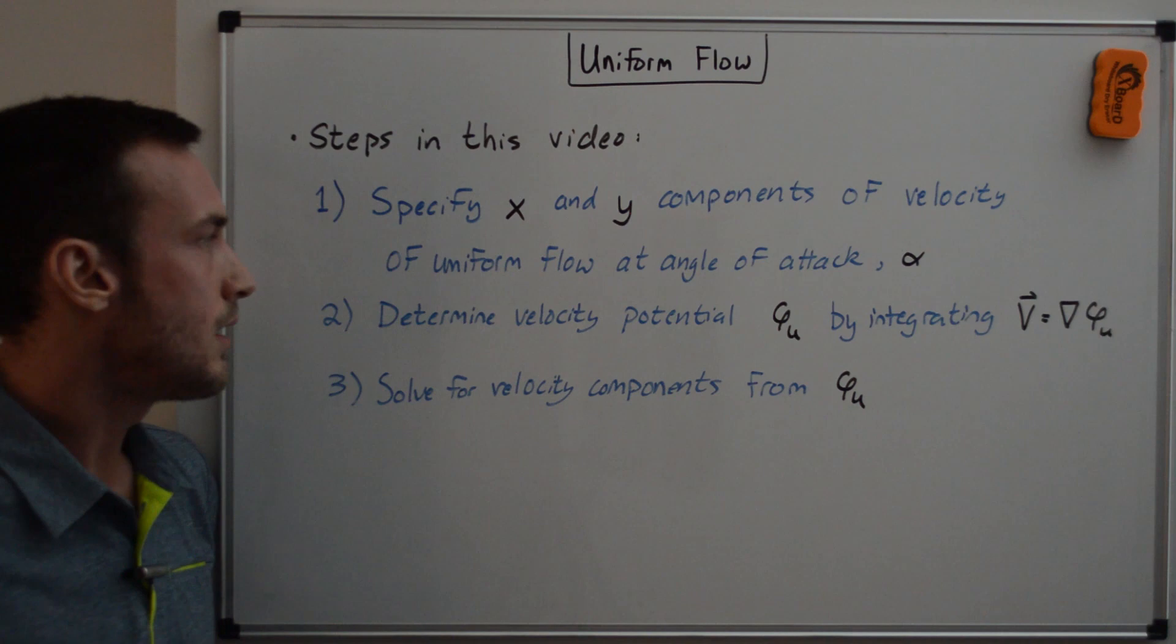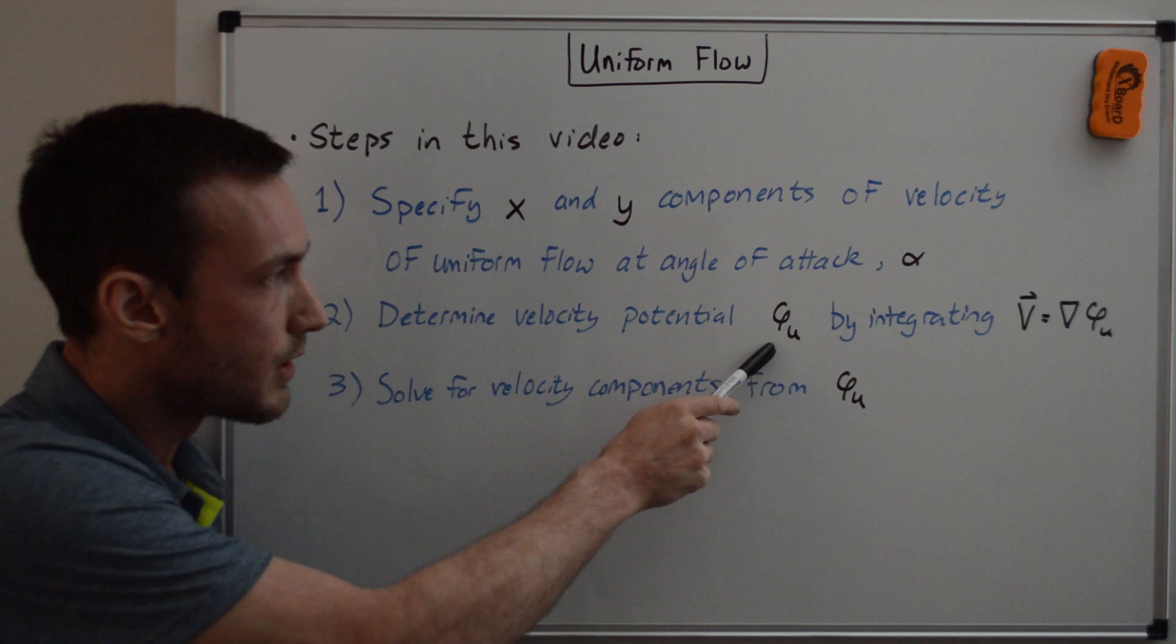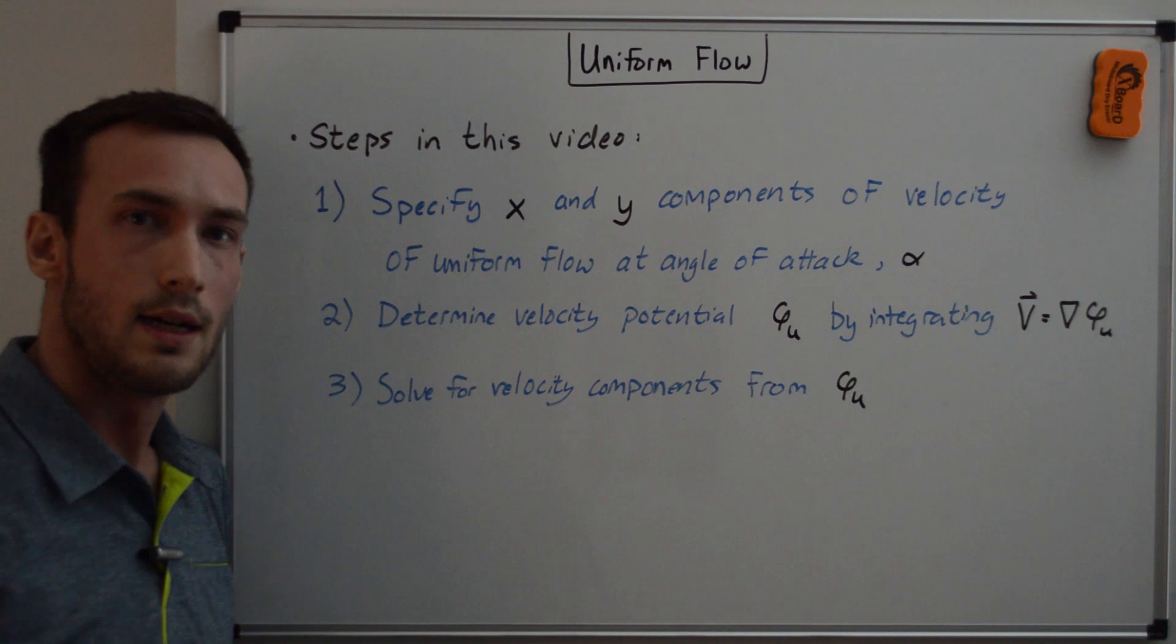Then we're going to determine the velocity potential phi sub u, u for uniform, by integrating the equation v equals del phi. And then finally, we're going to solve for the velocity components from this value, from phi u, and compare to the initial ones that we had specified from step one.